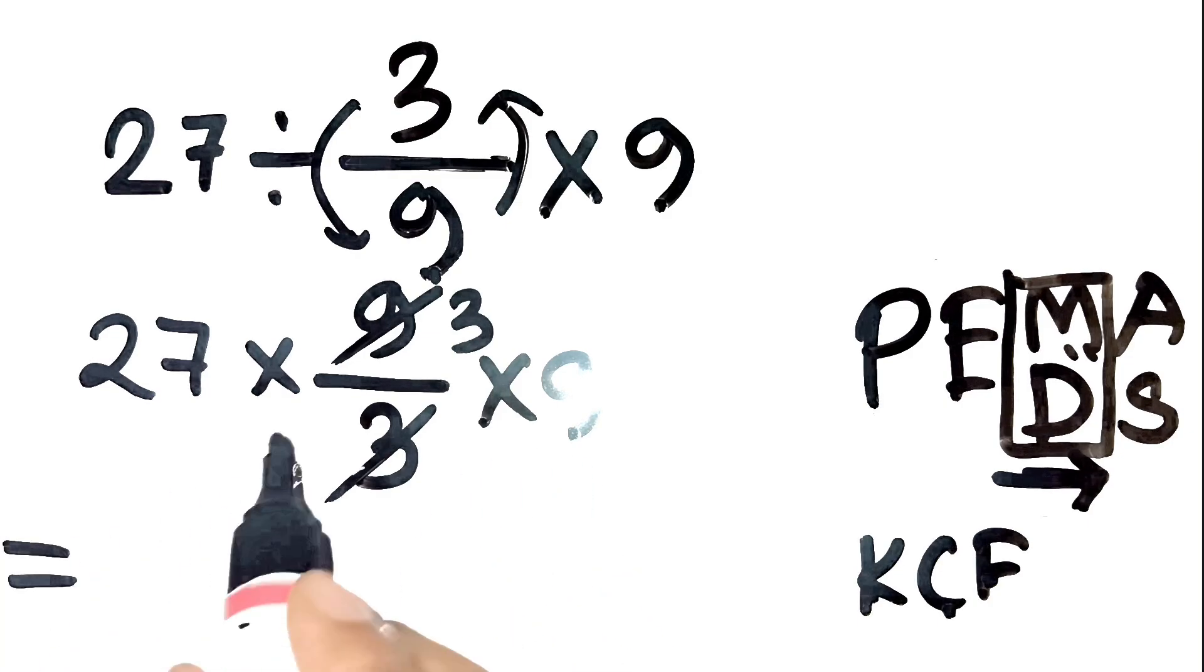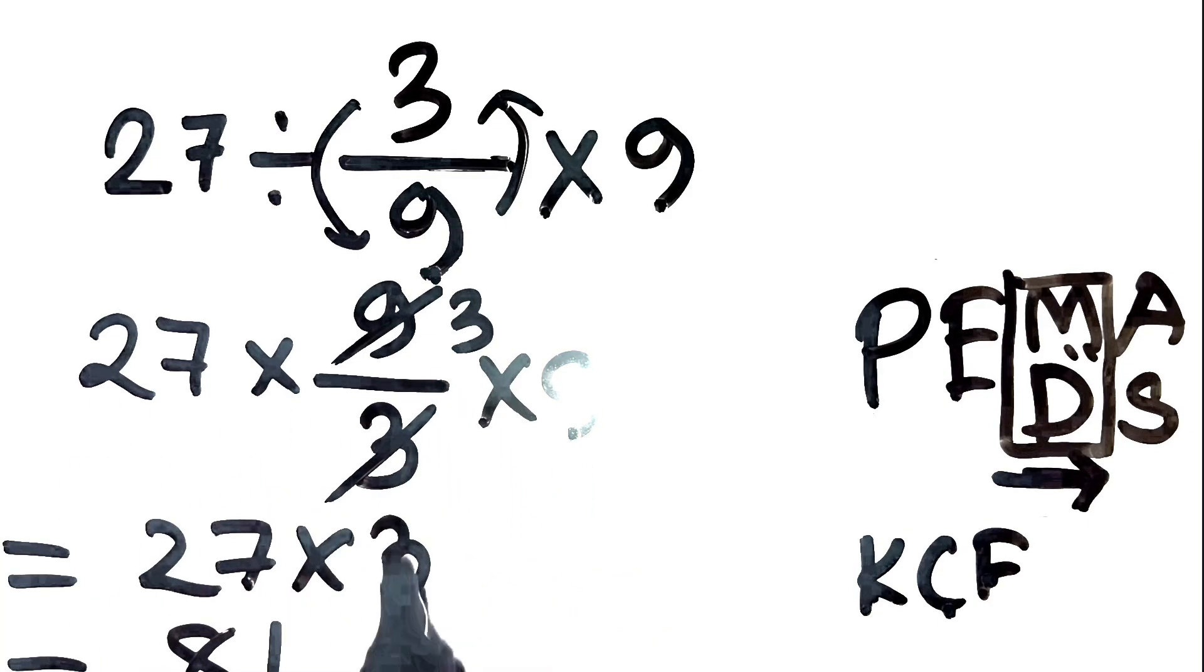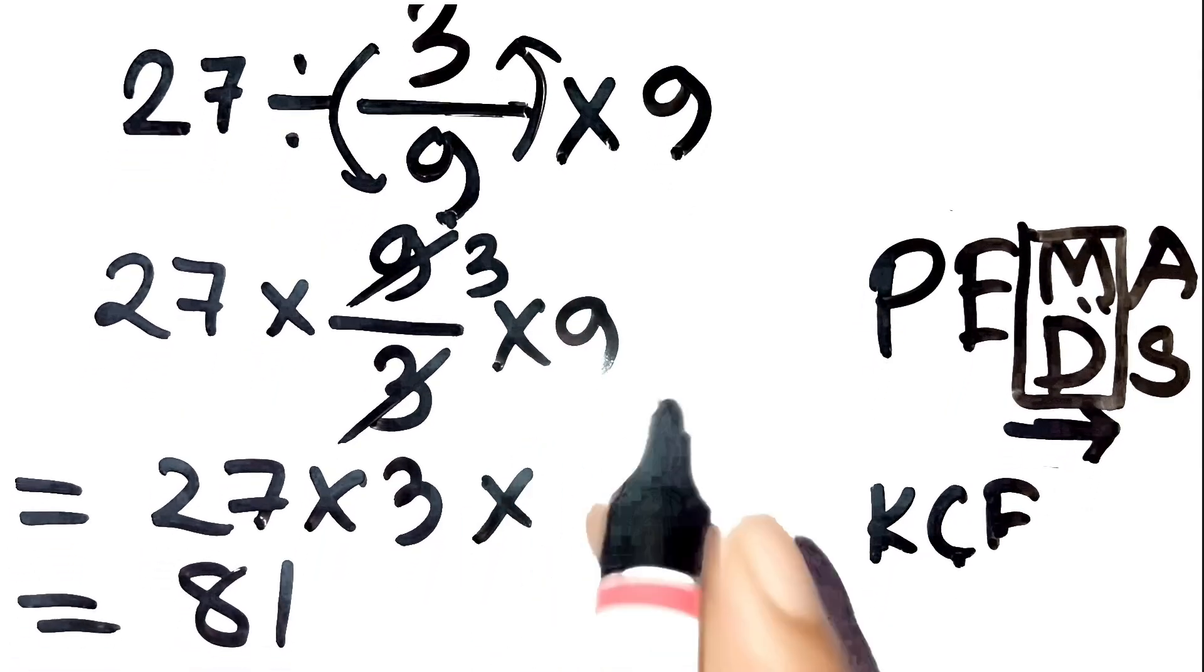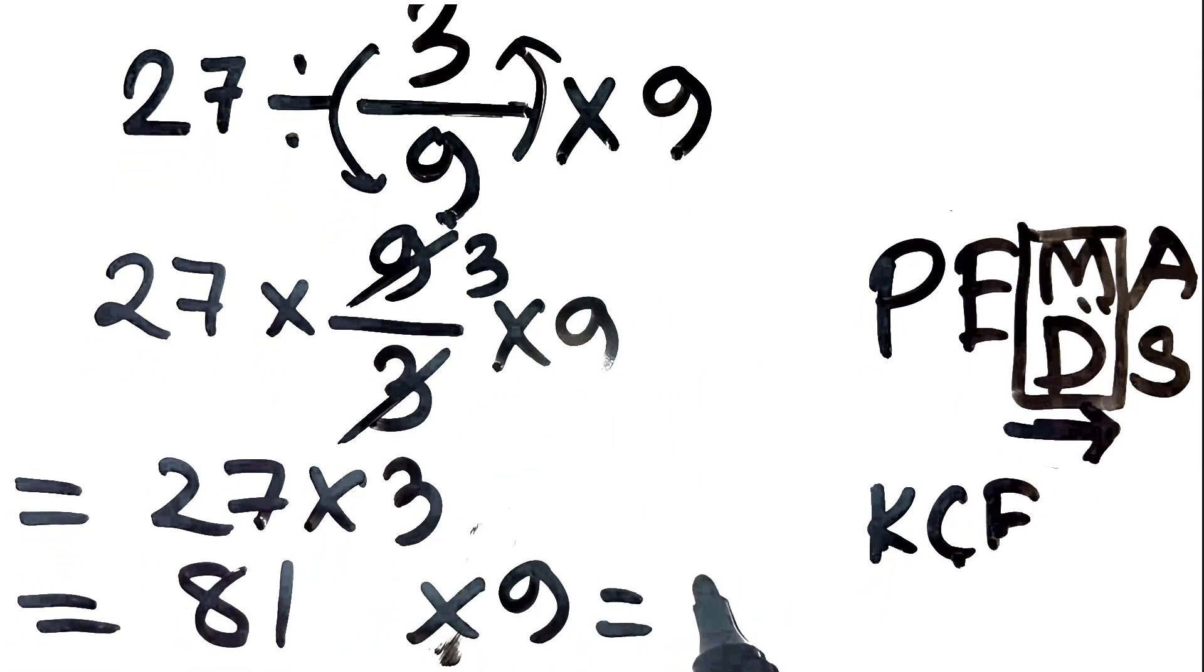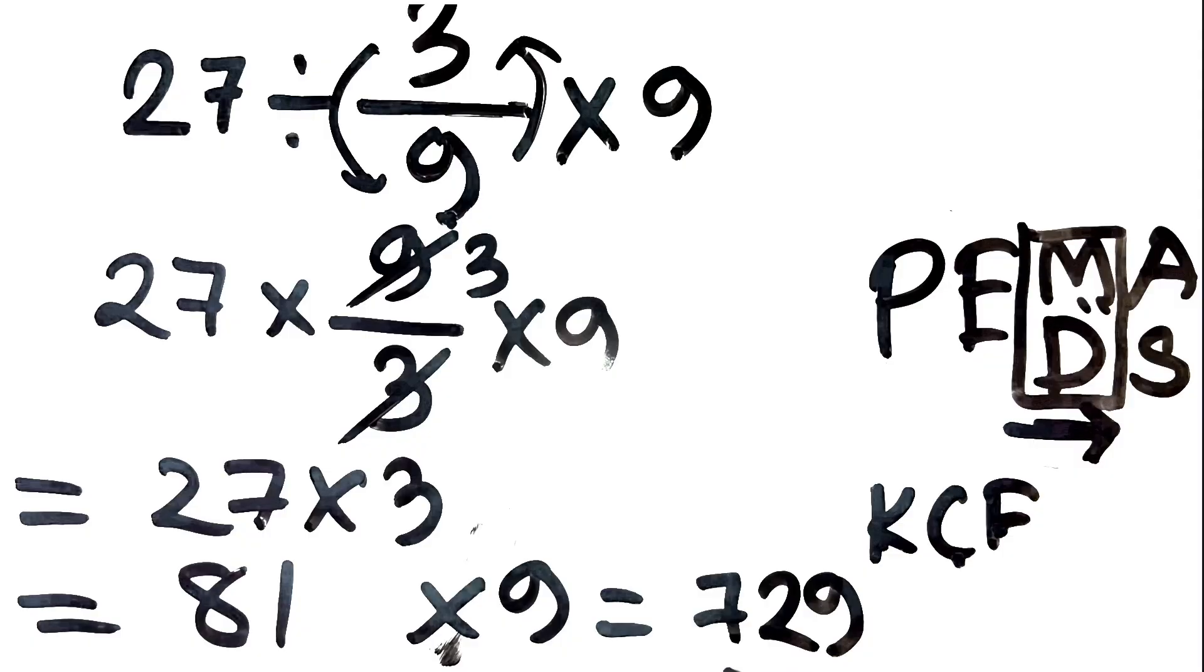Step 3, multiply from left to right. 27 times 3 is 81. Step 4, now multiply 81 times 9, which is 729. So the correct answer is 729, not 9.